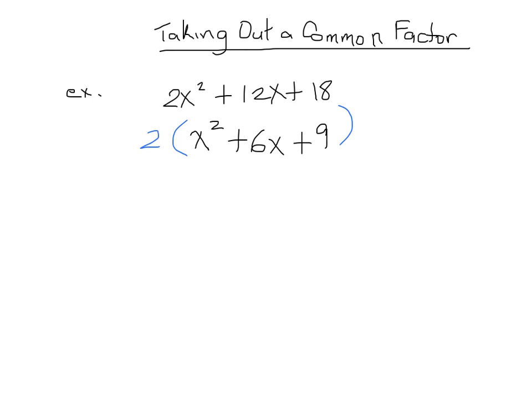But we're not done because this actually can be factored further. So we're going to do the same thing we did before. We're going to look for two numbers with a product of 9 and a sum of 6. Two numbers with a product of 9 and a sum of 6. And our two numbers are 3 and 3. And yes we can use the same numbers. And as we did before we are separating our x squared and we have to rewrite our 2. So we now have 2 times x plus 3 times x plus 3. Now that is the answer for this one.